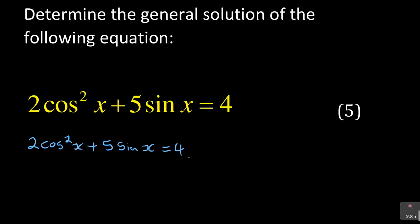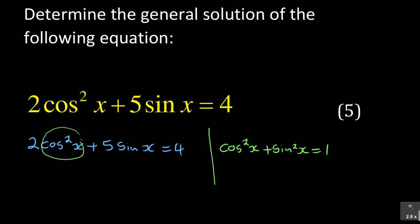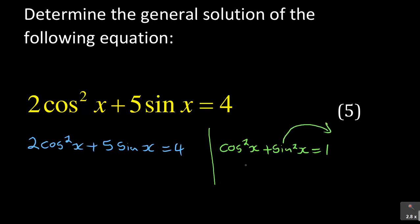You need to know the strategy for solving this. Whenever you are given cos squared and sine together, your way to go is to remember the identity: cos squared x plus sine squared x is equal to one. This identity always helps you when you are given two different trig ratios — in this case cos and sine. Since we are given cos squared, I can make cos squared the subject by taking sine squared to the other side.